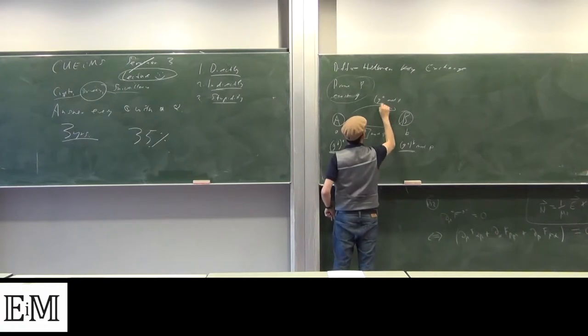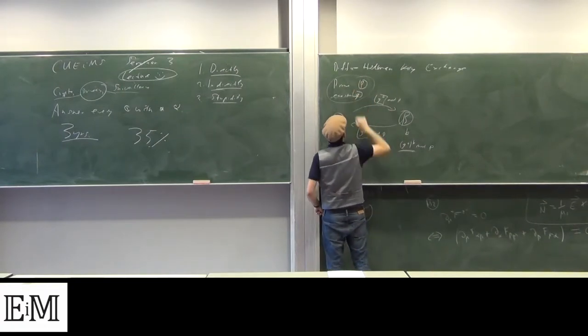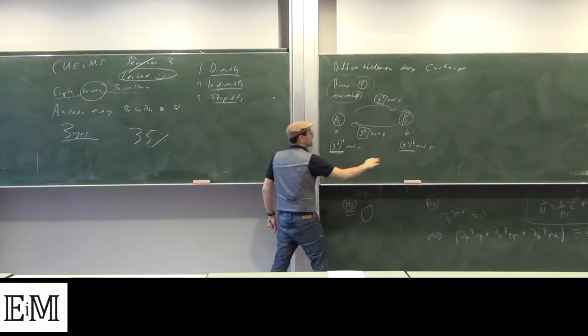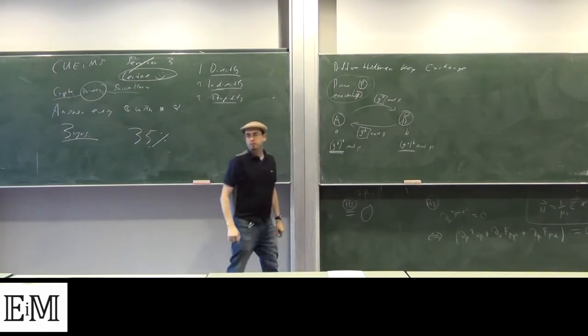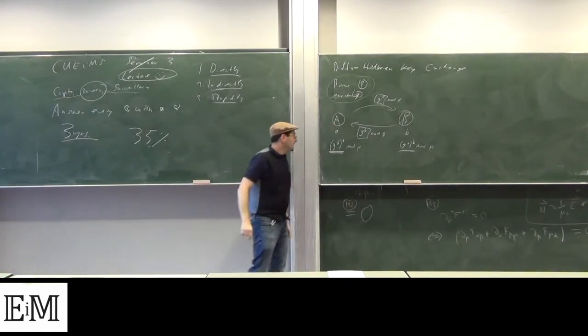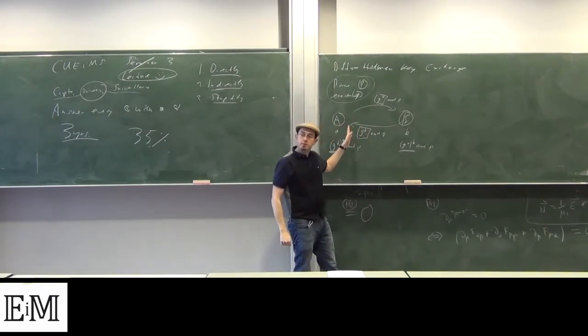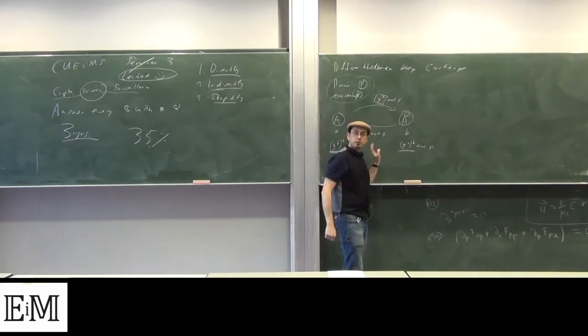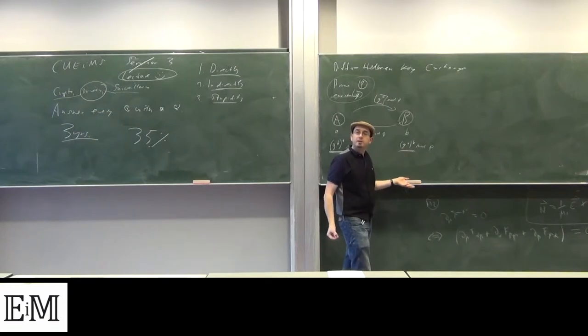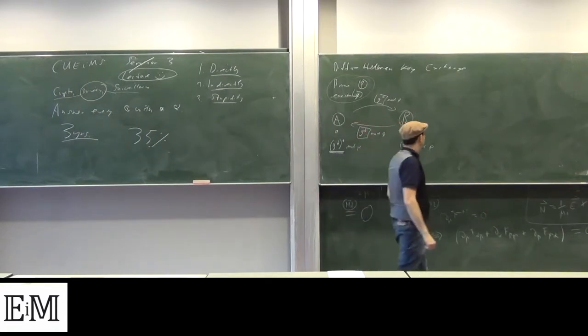They're transmitting over insecure channels. So everyone can read P, G, G to the B, G to the A. But it's fairly well understood that this is a difficult thing to reverse engineer. If you just have these pieces of information, that's not enough to recover these. Well, sort of.